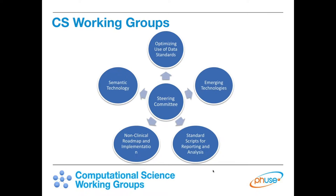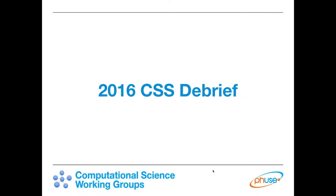Currently we have five working groups: Optimizing Use of Data Standards, Semantic Technology, Emerging Trends and Technology, Standard Scripts, and the Non-Clinical Working Group — which I believe is changing its name. We are currently running over 30 active projects, and as you'll see in the FUSE monthly mailshot out early next week, we have three to five new projects starting.